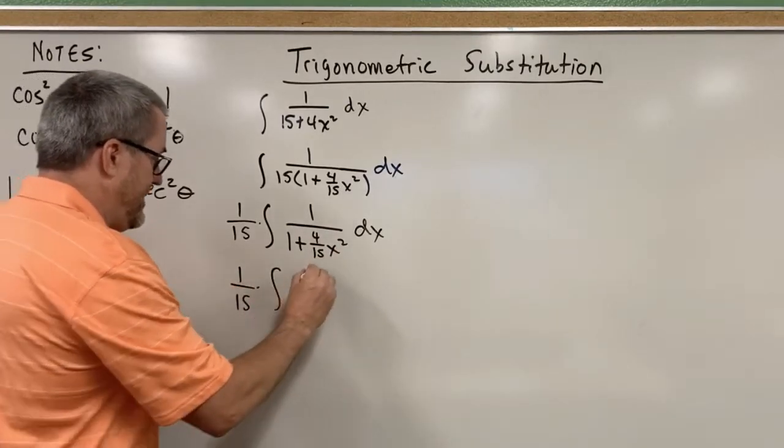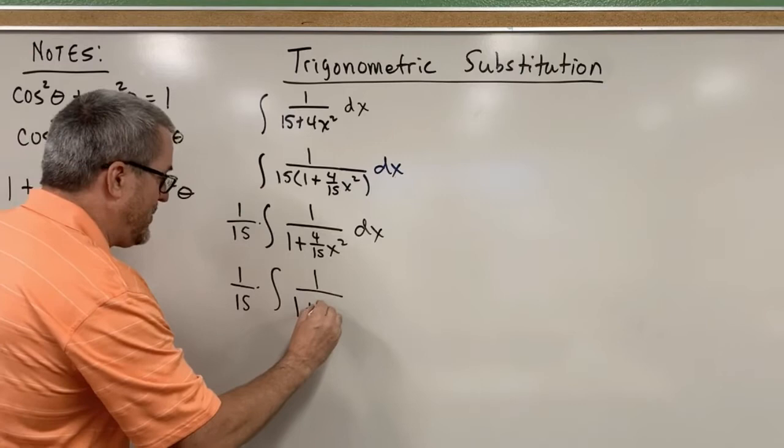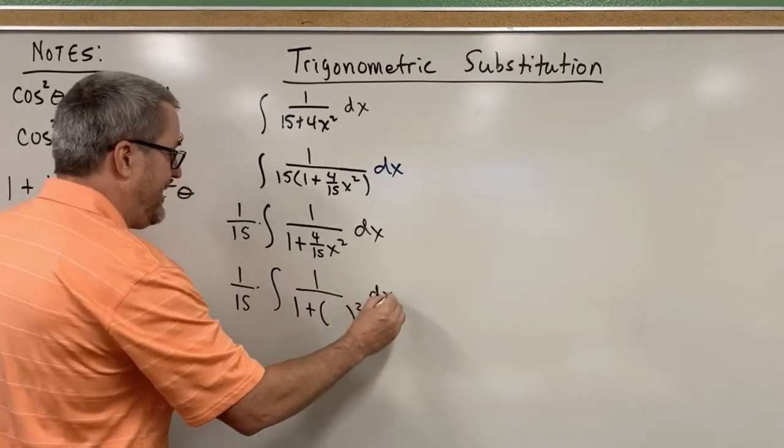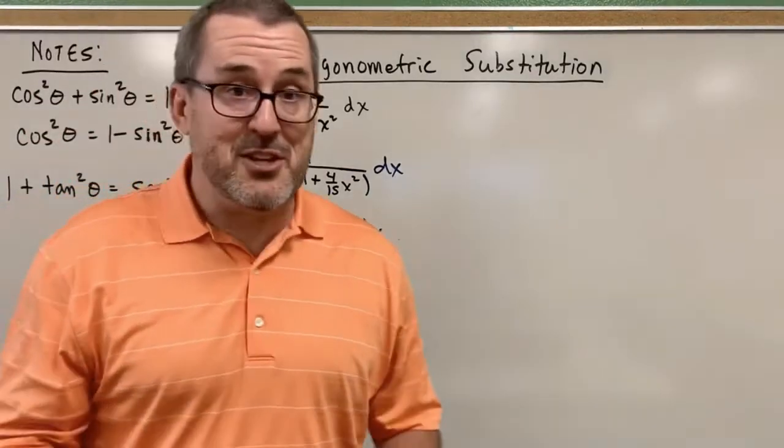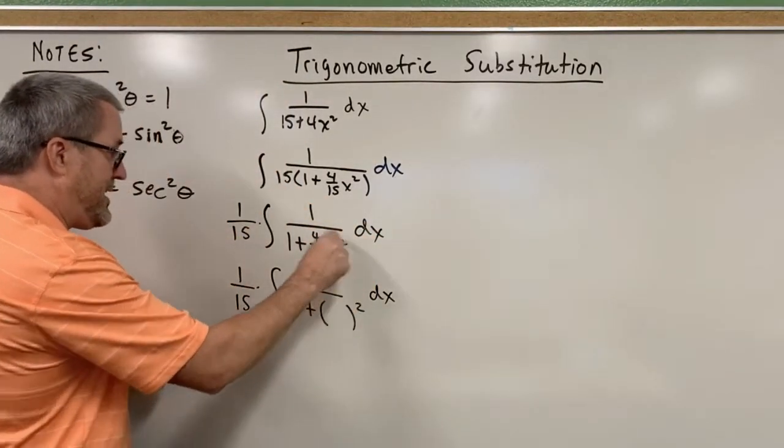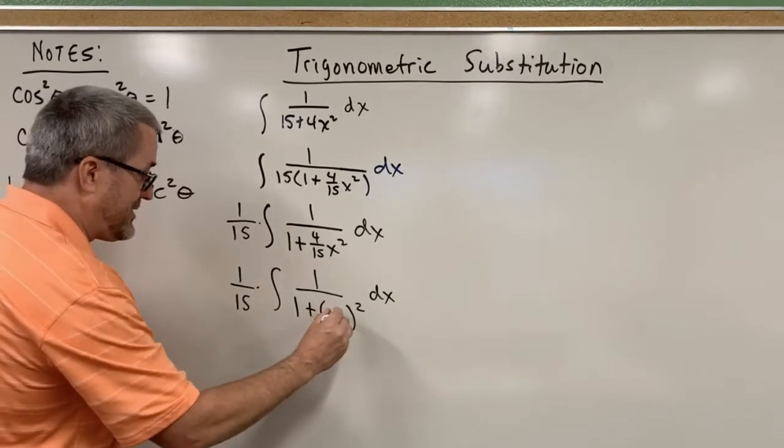Now, let's work on this term here. Can you imagine if this term was 1 plus 1 quantity squared? Ultimately, 1 plus tangent squared. But what would that 1 quantity squared need to be to produce 4 fifteenths x squared?